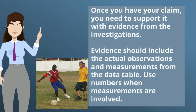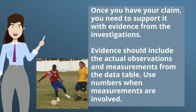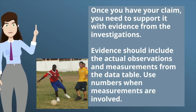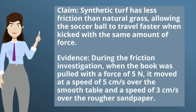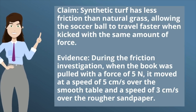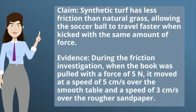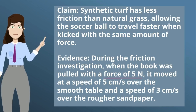Once you have your claim, you need to support it with evidence from the investigations. The evidence should include the actual observations and measurements from the data table. Use numbers when measurements are involved. Here is an evidence that could support the claim: during the friction investigation, when the book was pulled with a force of 5 Newtons, it moved at a speed of 5 centimeters per second over the smooth table.